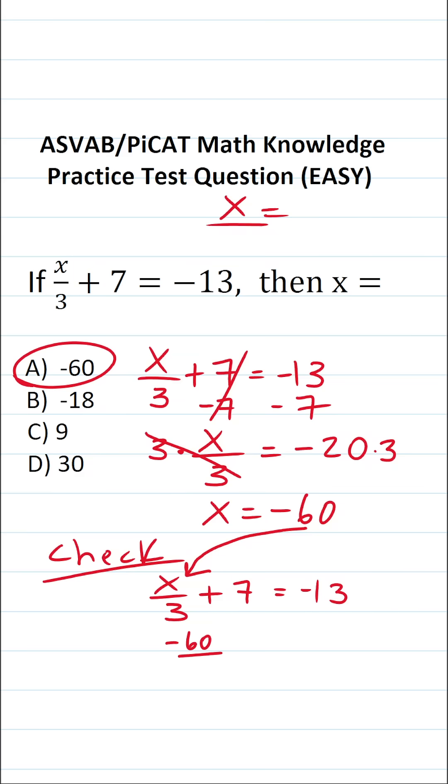This becomes negative 60 over 3 plus 7 equals negative 13. A negative divided by a positive is going to be a negative. More specifically negative 60 divided by 3 is negative 20 plus 7 equals negative 13. Negative 20 plus 7 is negative 13.